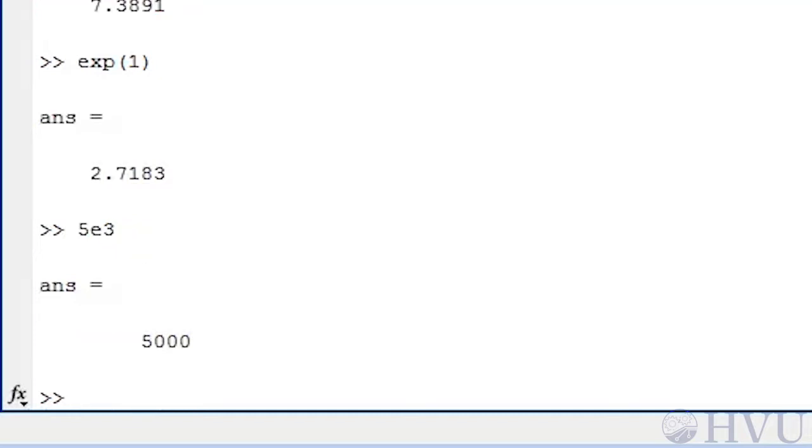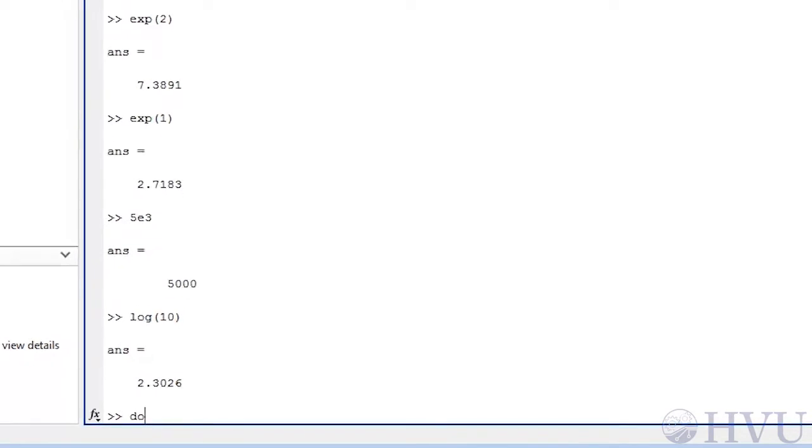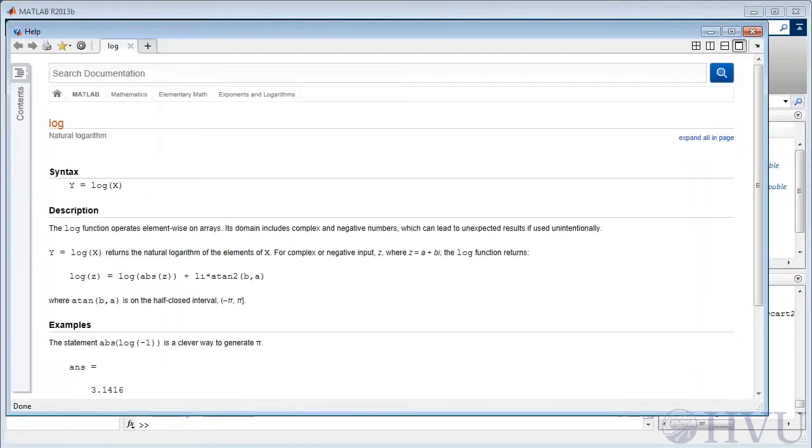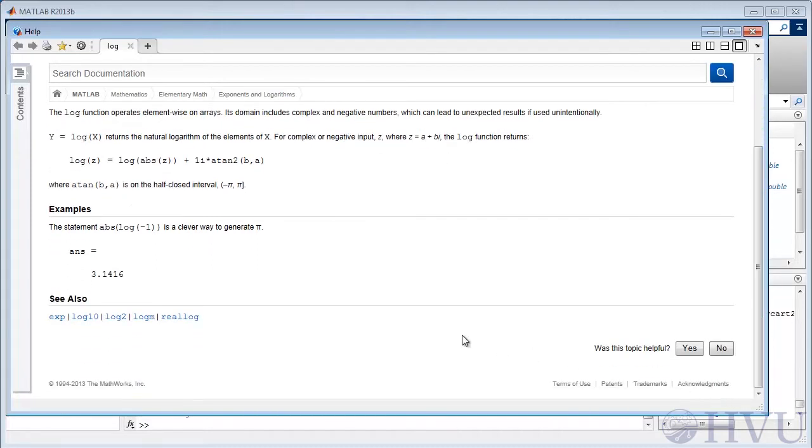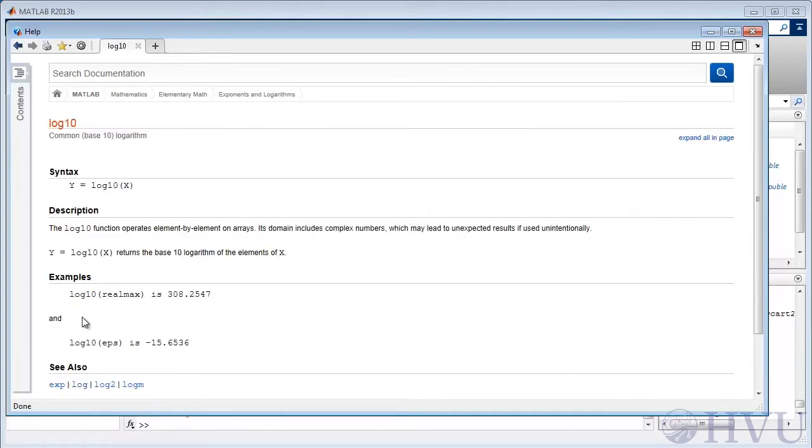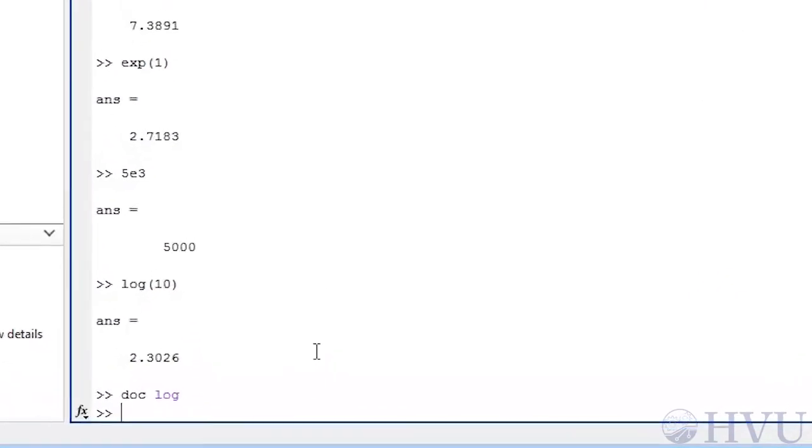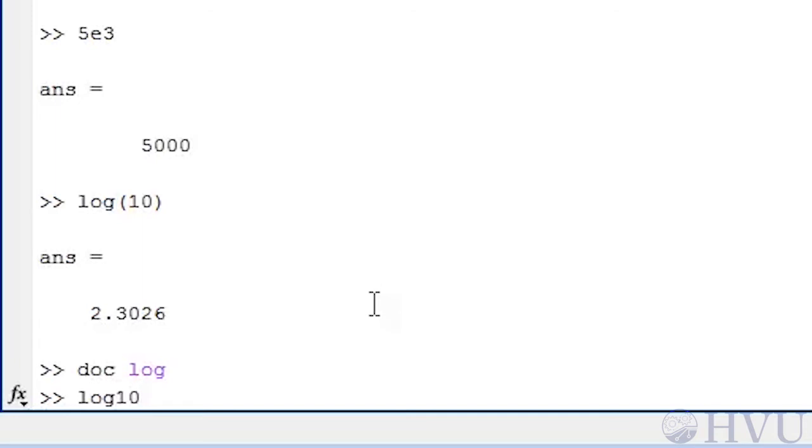As another example, to perform a base 10 logarithm, I would probably guess that the function is log. However, if I type log(10), I don't get 1, which is the base 10 log of 10. Let's use the help function to figure out what's going on. To see the help about the log function, type doc log. The log function is performing a natural logarithm. Let's scroll down to the bottom of the help topic list for a similar list of functions. Log10 looks like a pretty good candidate. Let's see what that tells us. Log10 is actually a base 10 logarithm. Now let's retry our previous calculation. Typing log10 of 10 returns 1, as we would expect.